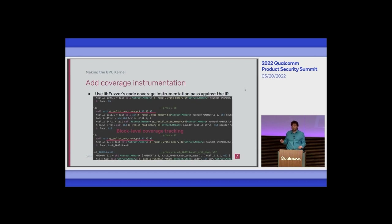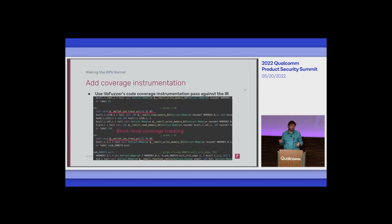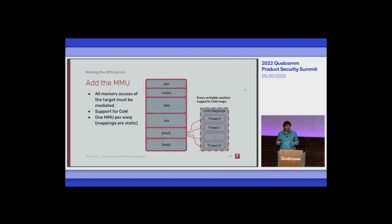We can take libFuzzer's instrumentation pass and apply it to the LLVM IR we have. We implement PC tracing, program counter tracing, and branch condition tracing. There were some modifications needed to make the pass more compliant with what a GPU expects, but we can do this. Then comes the interesting part: we need to add an MMU, and every memory access has to be mediated.